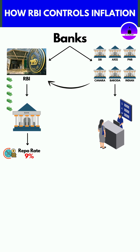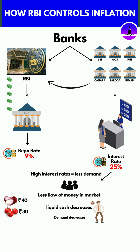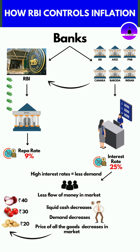Repo rate is a famous tool used in this situation. The RBI increases the repo rate at which it gives loans to commercial banks. As a result, commercial banks increase their interest rate for loans to the general public. When interest rates are high, the demand for loans decreases, the flow of money decreases, liquid cash in the hands of people decreases, demand decreases, and the price of all goods and services decreases in the market.